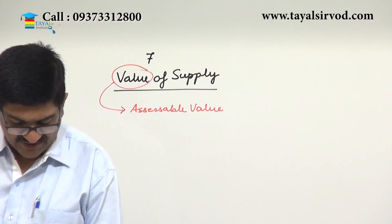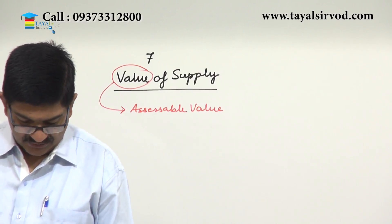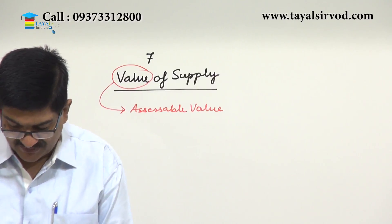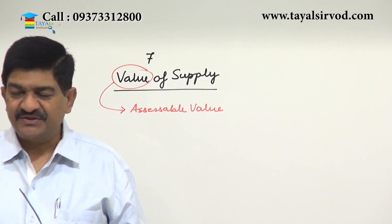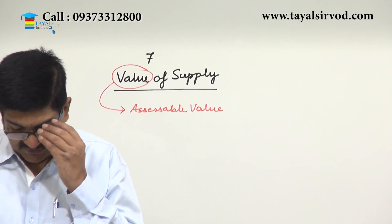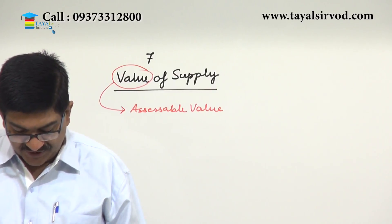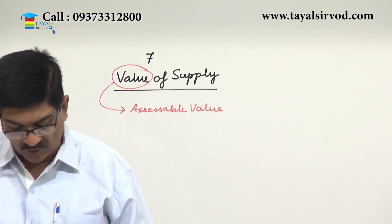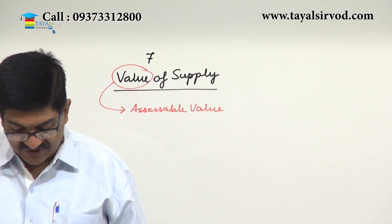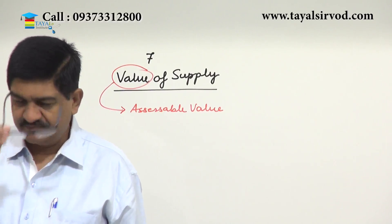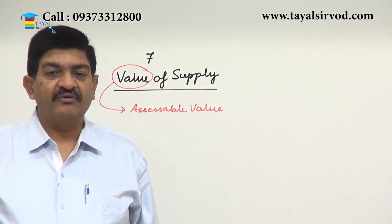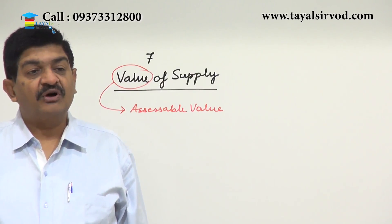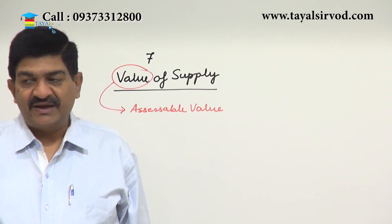We have a few relevant definitions. An agent means a person including a factor, broker, commission agent, del credere agent, an auctioneer, or a mercantile agent — by whatever name called. What is important is the last line: an agent is one who carries on the business of supply or receipt of goods or services on behalf of another. Whatever name is given is not important; what matters is his role — supplying or receiving goods or services on behalf of another — then that person will be referred to as an agent.